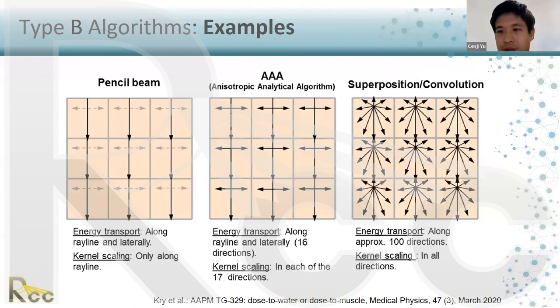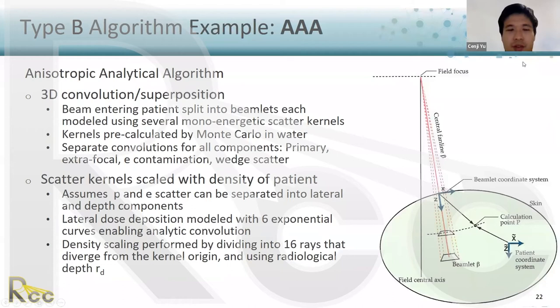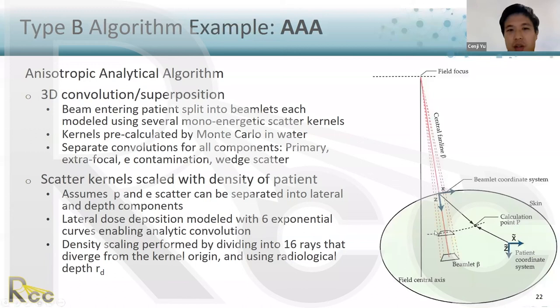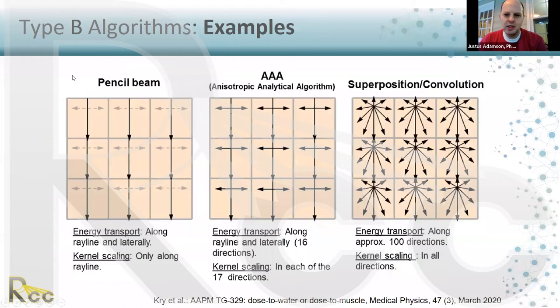Audience question: For the separate convolutions for all components, are they doing different types of convolution at each location, or mixing within the same kernel? The answer is that these are separate kernels — the kernels look different based on Monte Carlo, the convolutions happen separately, and then the final dose is the sum of each of those individual kernel convolutions.